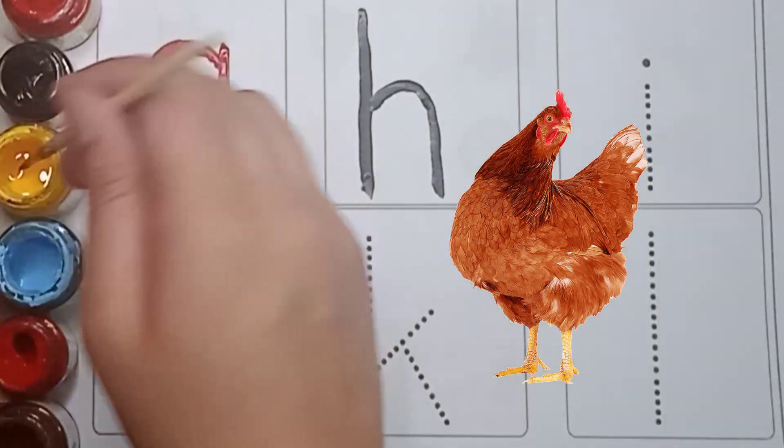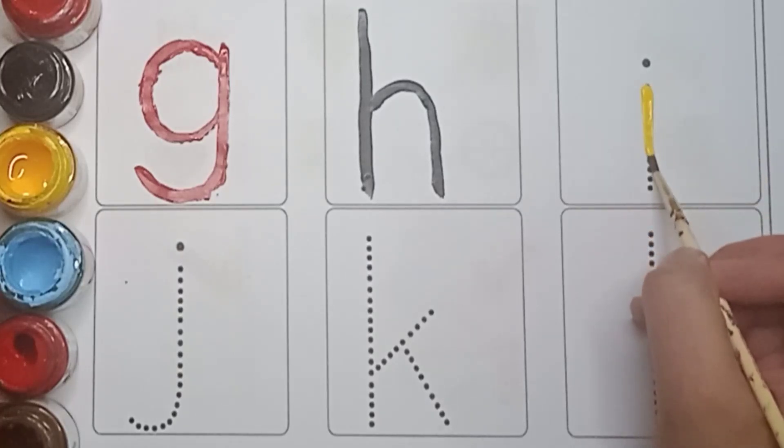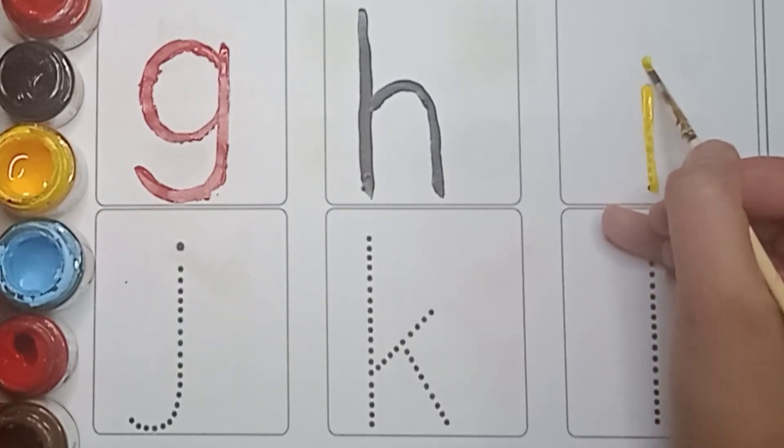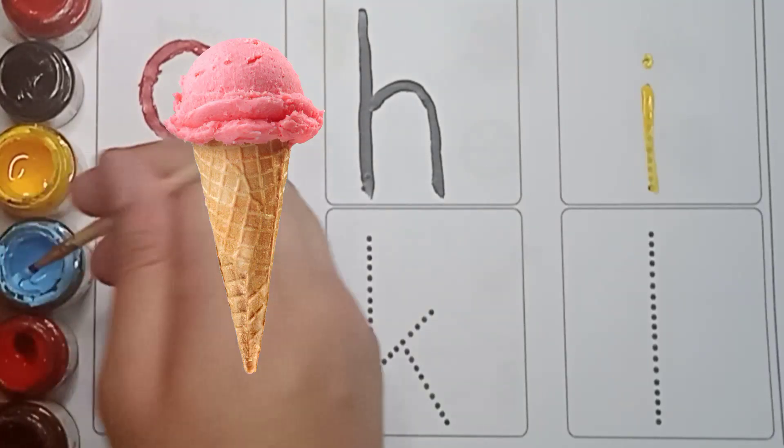Yellow color. Yellow color I. First make a standing line. And one small dot. It's I. I is for Ice Cream.